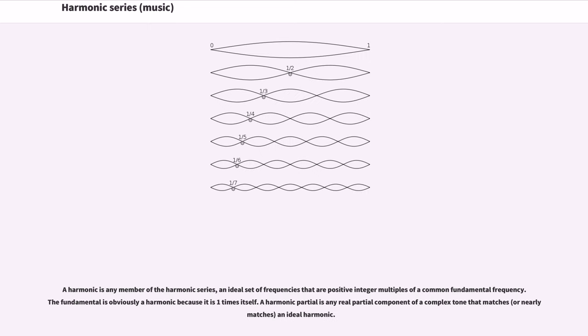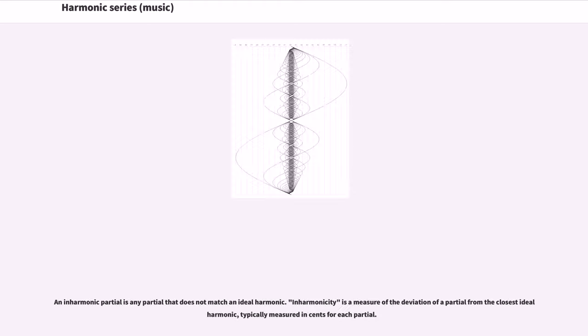A harmonic is any member of the harmonic series, an ideal set of frequencies that are positive integer multiples of a common fundamental frequency. The fundamental is obviously a harmonic because it is one times itself. A harmonic partial is any real partial component of a complex tone that matches or nearly matches an ideal harmonic. An inharmonic partial is any partial that does not match an ideal harmonic.